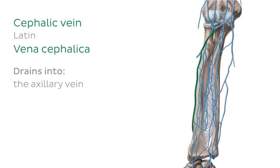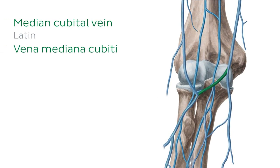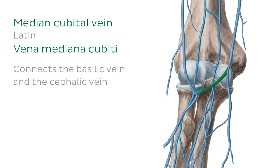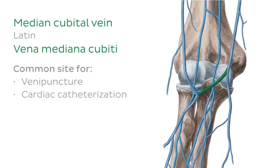Before moving on, I want to tell you about a small but important vein located in the region of the anterior cubital fossa — the pit of your elbow. This almost horizontal vein is the median cubital vein, and it serves to connect the basilic vein and the cephalic vein. The median cubital vein is the most common site for venipuncture and is also used for the introduction of cardiac catheters during cardiac catheterization.